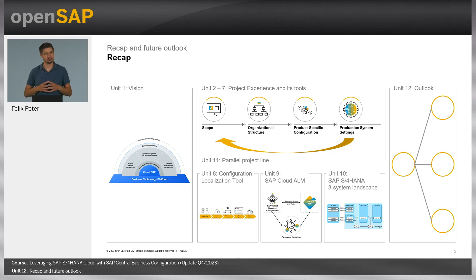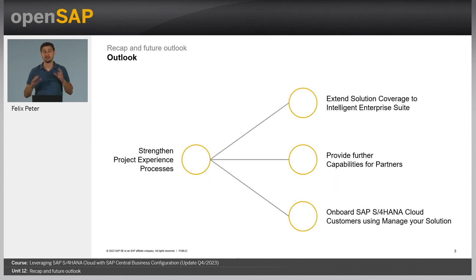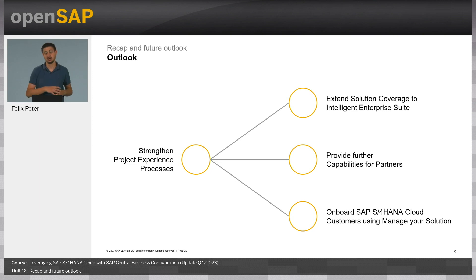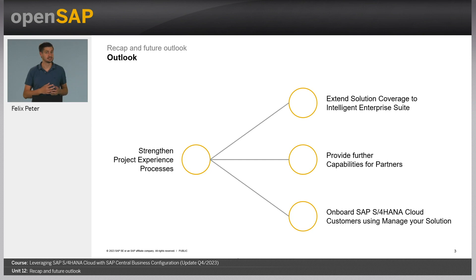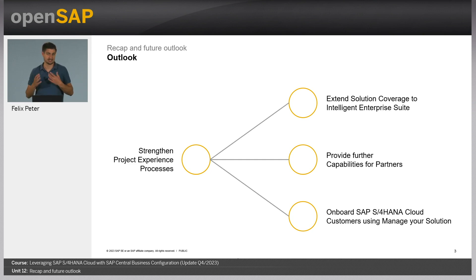Now let's jump to the focus of this unit, which is the outlook. This unit will have four main elements. First is the project experience and how we intend to strengthen these processes in the future. Then we'll look at extending the solution coverage of Central Business Configuration, the capabilities we want to offer for partners, and finally our onboarding for SAP S/4HANA Cloud customers currently using the Manage Your Solution.